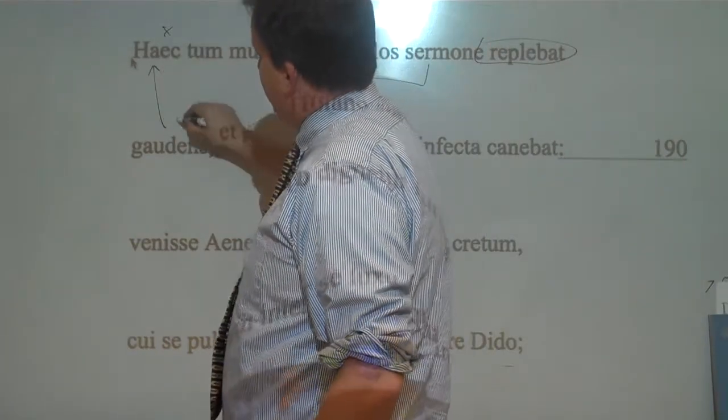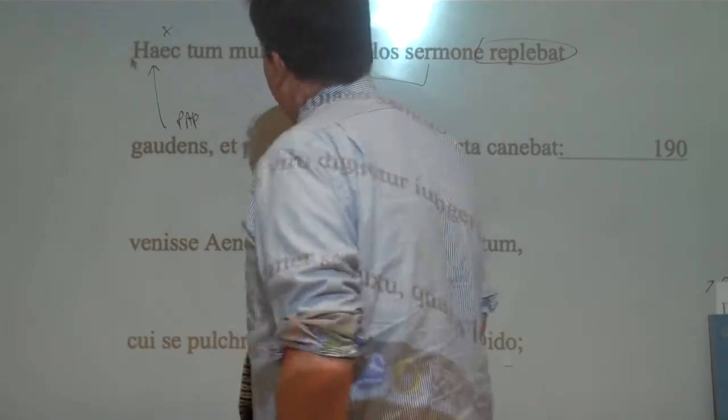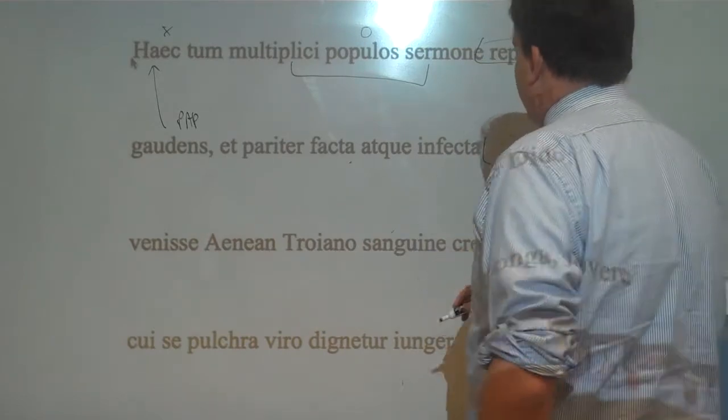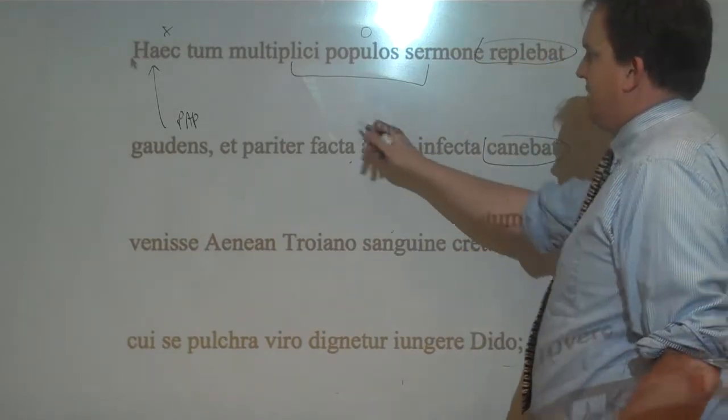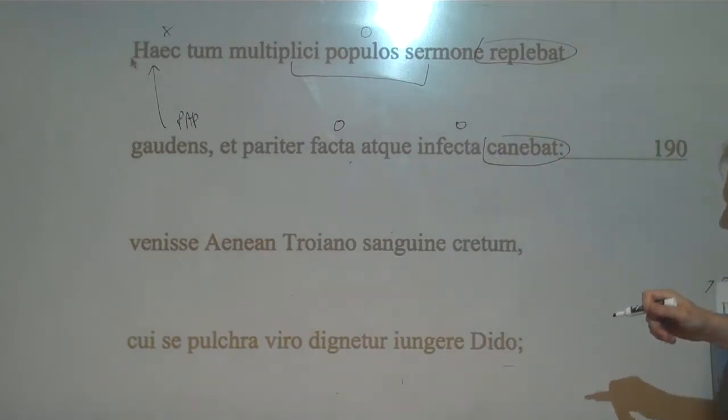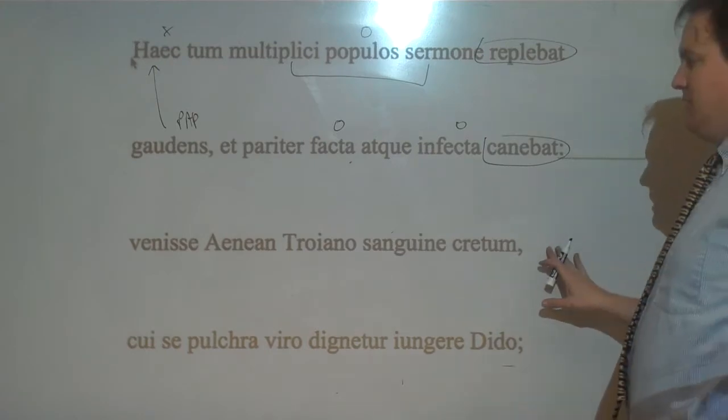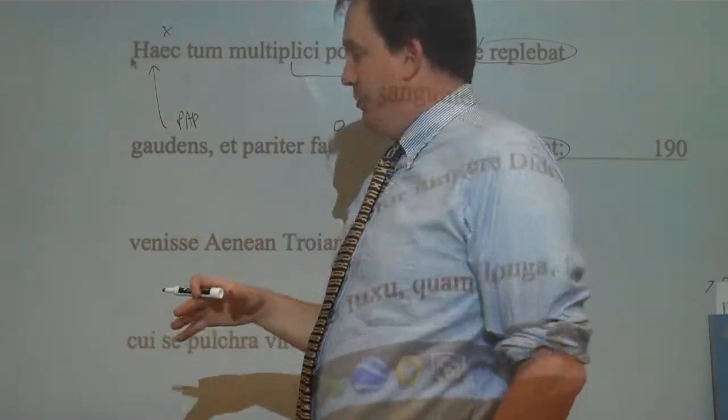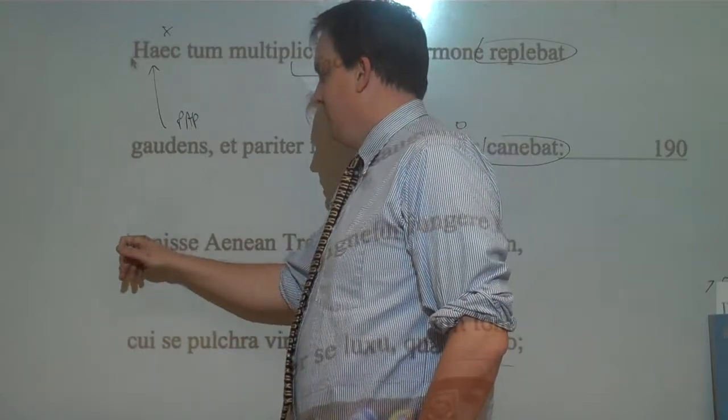Gaudiens, since referring back to Haec, rejoicing, and equally saying facta and infacta, fact and fiction, or true things and untrue things. And this is what she said. Indirect statement. And this is talking about Aeneas and Dido. Everyone's talking about what had happened in the cave and now that they're living together.